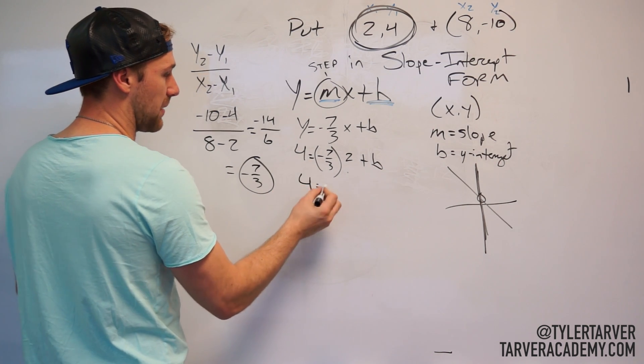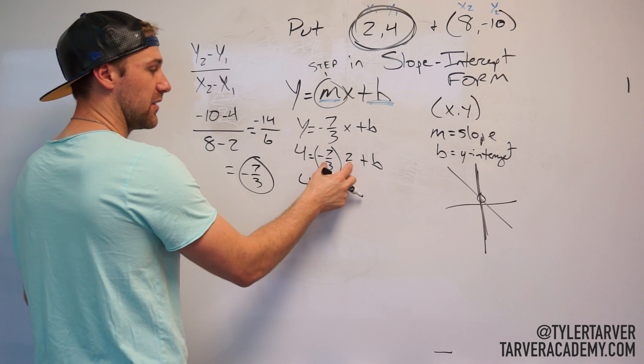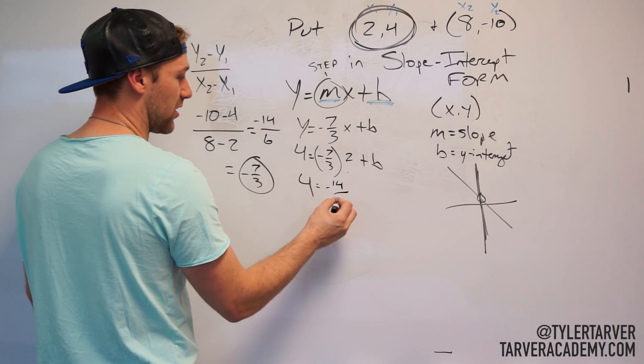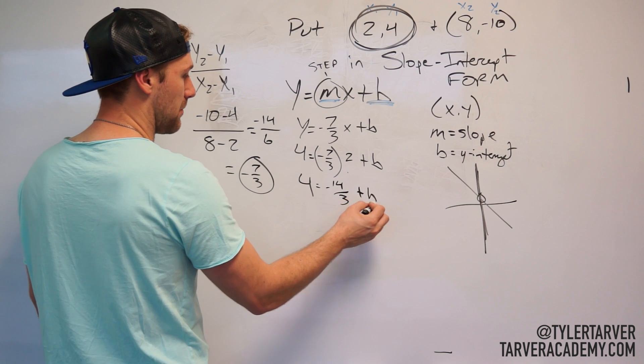We've got 4 here. I'm going to keep that where it is. I'm going to multiply these two first. So I've got negative 14 over 3 plus b.